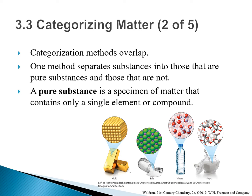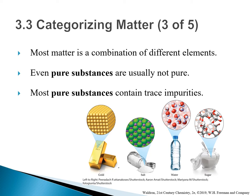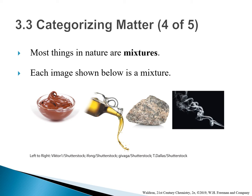Categorization methods overlap. One method separates substances into those that are pure substances and those that are not. A pure substance is a sample of matter that contains only a single element or compound, such as gold, salt, water, and sugar. Most matter is a combination of different elements. Even pure substances are usually not perfectly pure — in reality, most pure substances contain a trace amount of impurities.